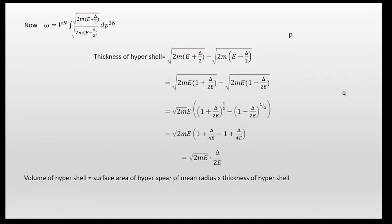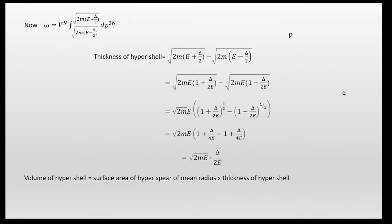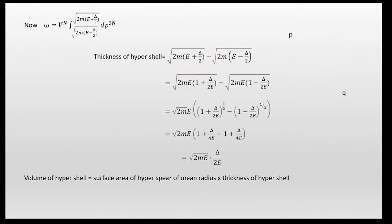So the volume in momentum space can be written as V^N times the integral from √(2m(E − delta/2)) to √(2m(E + delta/2)) of dp^(3N). The volume of this shell equals the surface area of the hypersphere times the shell thickness, which is the outer radius minus the inner radius, giving a thickness of √(2mE) · (delta / 2E).